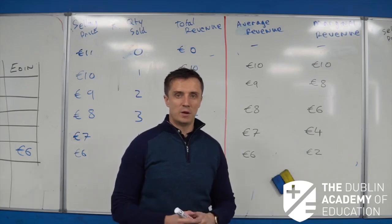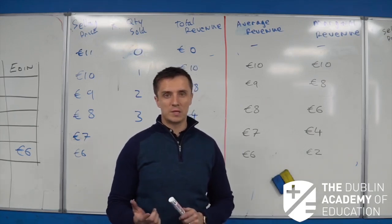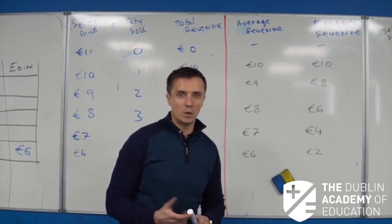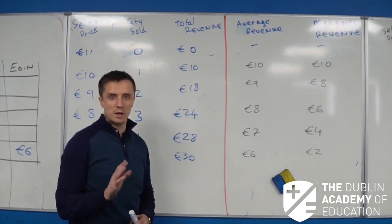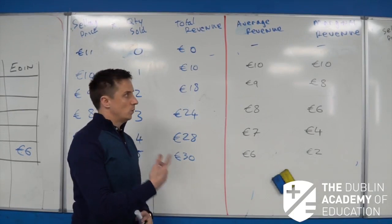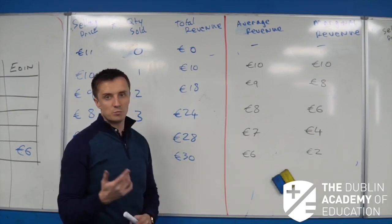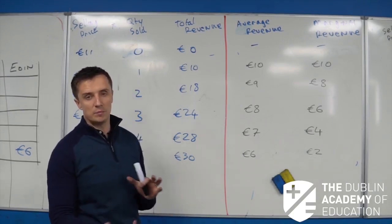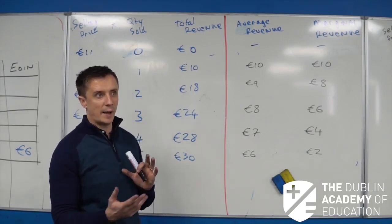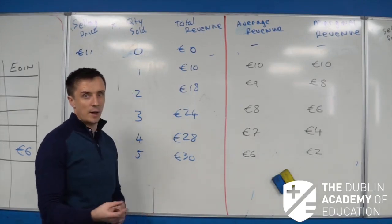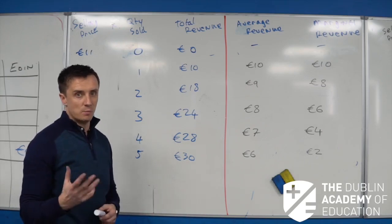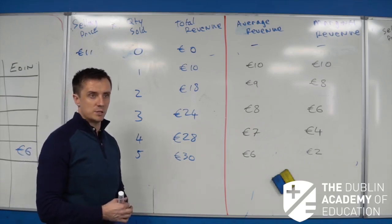Hi everybody, my name is Ron Murdoch and welcome to Leaving Cert Economics. I want to talk about something that I find a lot of students can get caught out on when they're looking at their cost production and especially their market structures question.